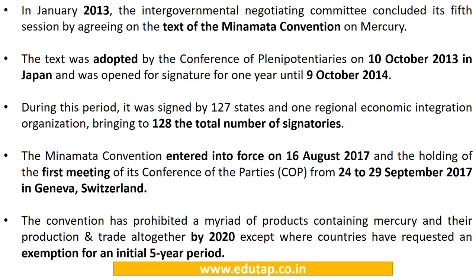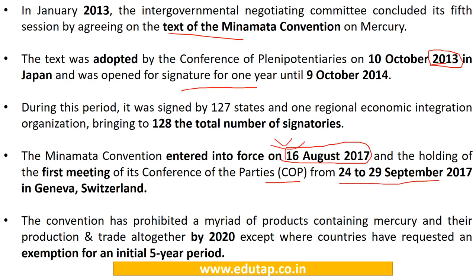The text of the Minamata Convention was adopted in October 2013 and it finally entered into force on 16 August 2017. The first meeting of the Conference of Parties was held in September 2017 in Geneva, Switzerland. The convention prohibits production and trade of many mercury products by 2020, except where countries have requested exemption for an initial five-year period.